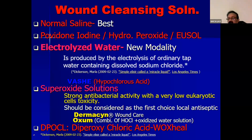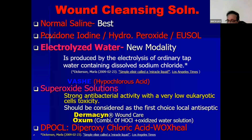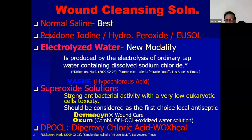Don't keep applying betadine every day when the patient comes with a diabetic ulcer. You should wash it with saline. There are specific indications for povidone iodine, hydrogen peroxide, and Dettol, which should be followed carefully.